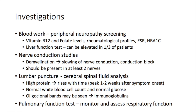There are a number of key investigations that can be performed to help with diagnosis. The first would be blood work, particularly tests that can screen for peripheral neuropathy — things like vitamin B12, folate levels, rheumatological profiles including erythrocyte sedimentation rate, since rheumatoid arthritis and systemic lupus erythematosus may present with peripheral neuropathy. HbA1c is also important, as advanced type 2 diabetes can present with peripheral neuropathy. In about one third of patients with Guillain-Barré syndrome, abnormal liver function tests may also be seen.